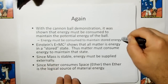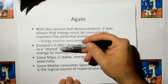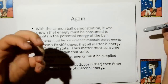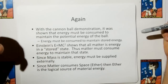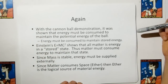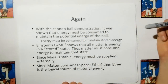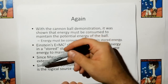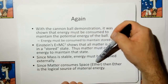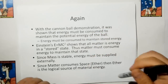Now, since mass is stable — in other words, mass is not consuming its own energy to maintain its energy, otherwise it would be losing mass — energy must be supplied externally. And since in the last video we theorized that matter must consume space, which is really the ether, then ether is a logical source of the material energy.